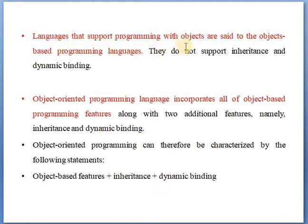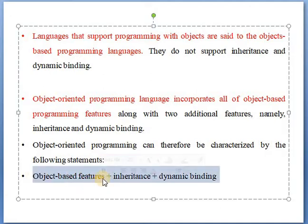Languages that support programming with objects are said to be object based programming languages, but they do not support inheritance, dynamic binding, or polymorphism. Object oriented programming languages, on the other hand, support all the object based programming features along with two additional features: inheritance and dynamic binding. So object oriented programming can be characterized as: object based features plus inheritance and dynamic binding.